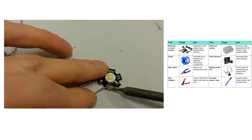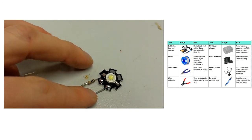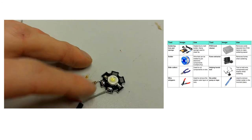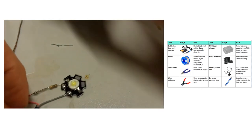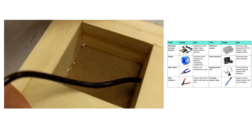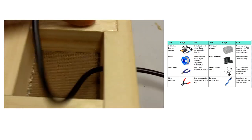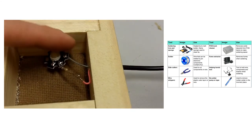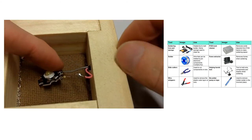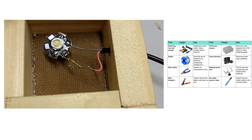Hold it in place, being careful to keep your fingers away from the solder as it will get hot. That's now all fixed in place. Pull the cable through and put your USB light inside your lamp. That's the end of the video.